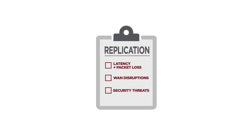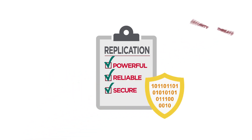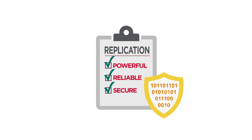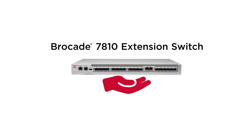But there is a cost-effective solution that is powerful enough to maximize throughput, reliable enough to protect against WAN disruptions, and secure enough to protect against threats without degrading performance. Meet the most affordable extension switch on the market, the Brocade 7810.